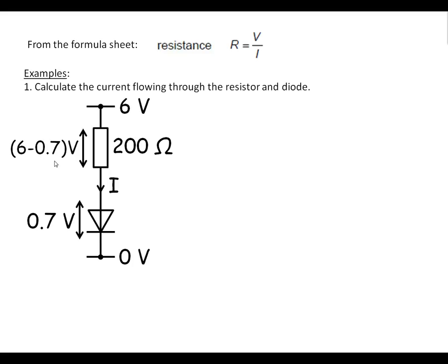It's going to give us 5.3 volts across the resistor. We can now use that. I equals V over R. Put in our numbers. That's our 5.3 volts divided by 200 ohms. Comes out with 16.5 milliamps.